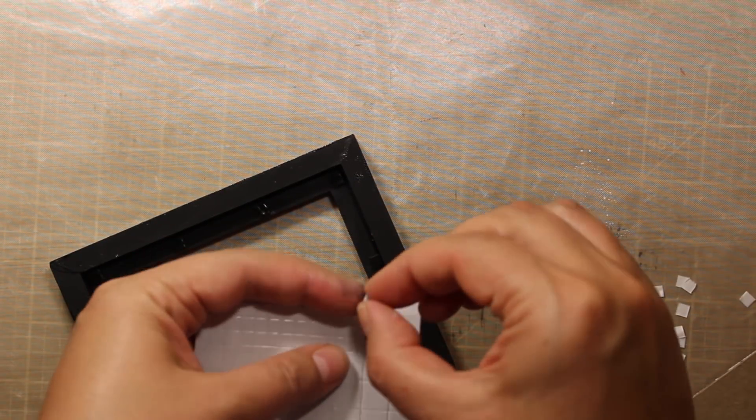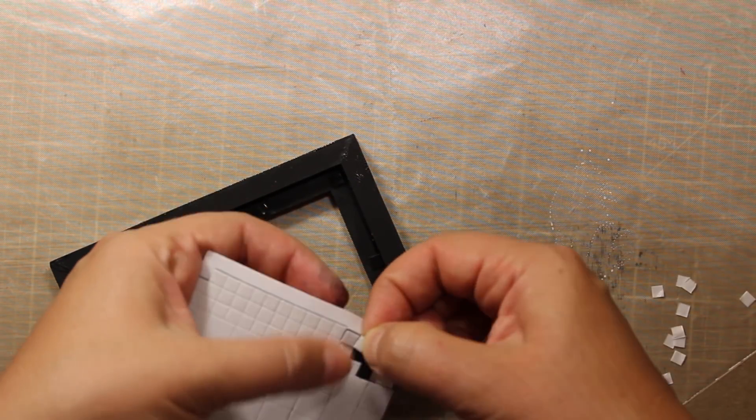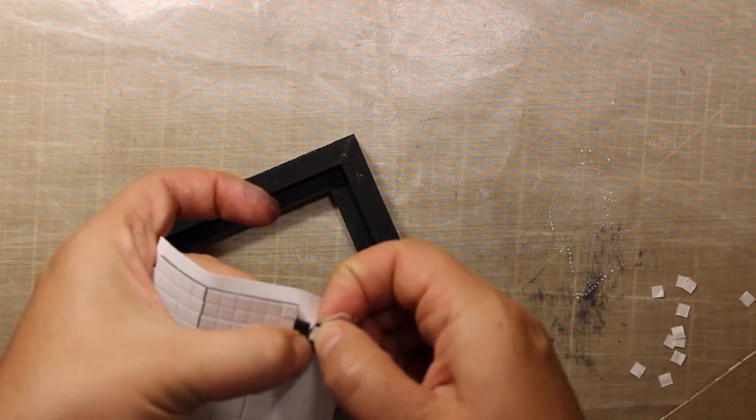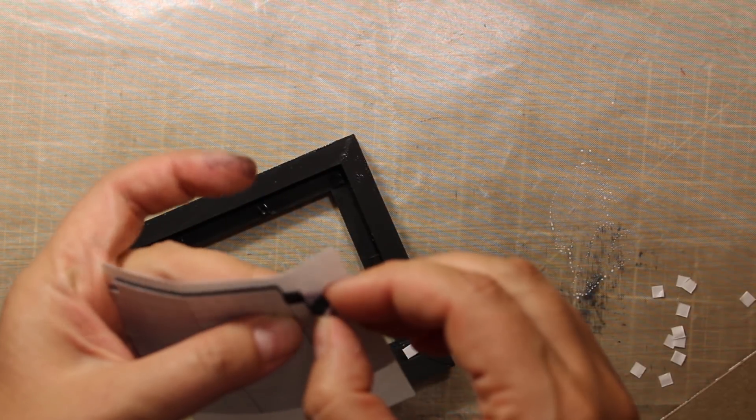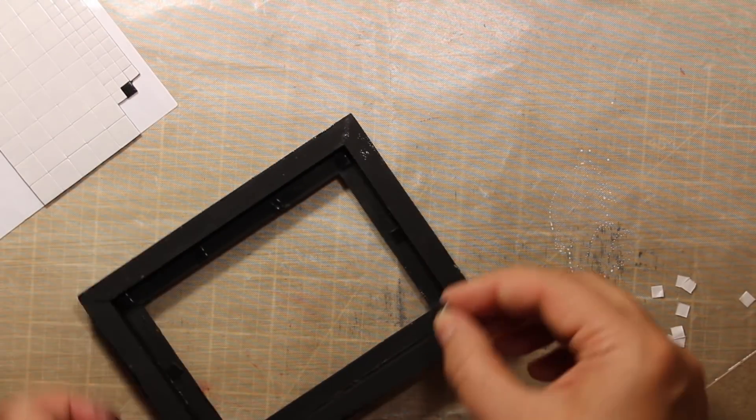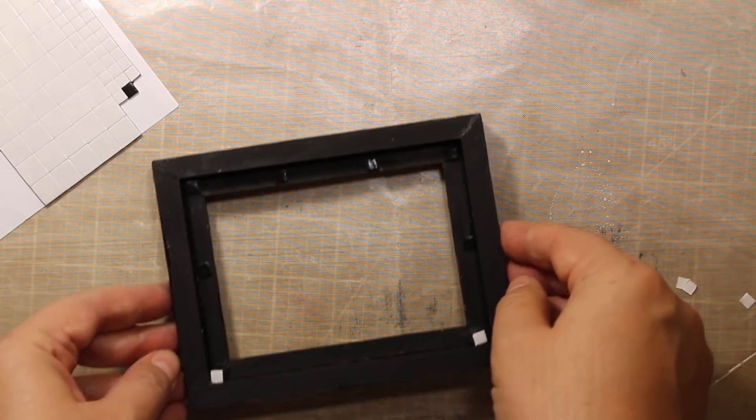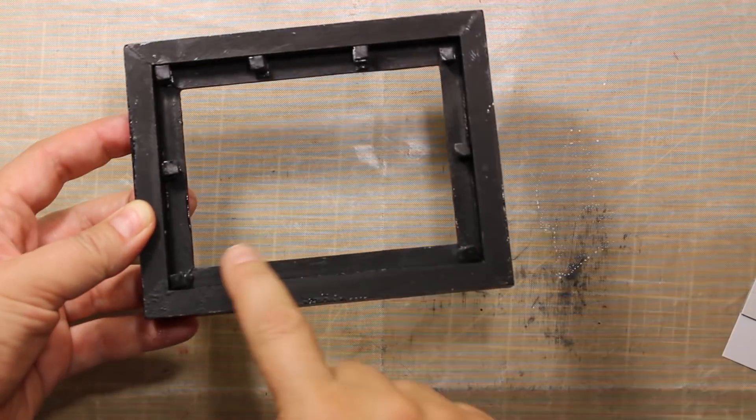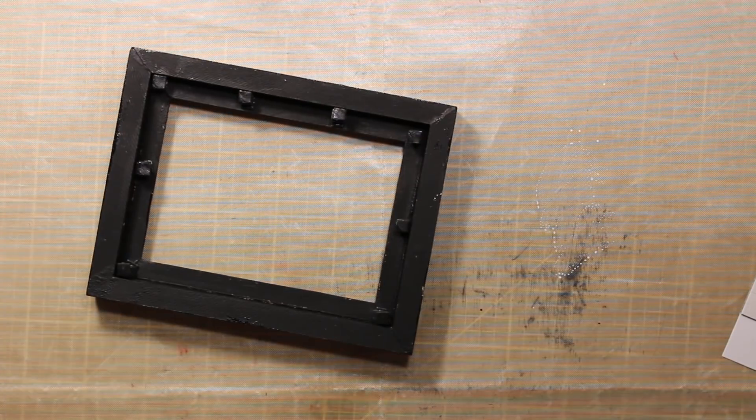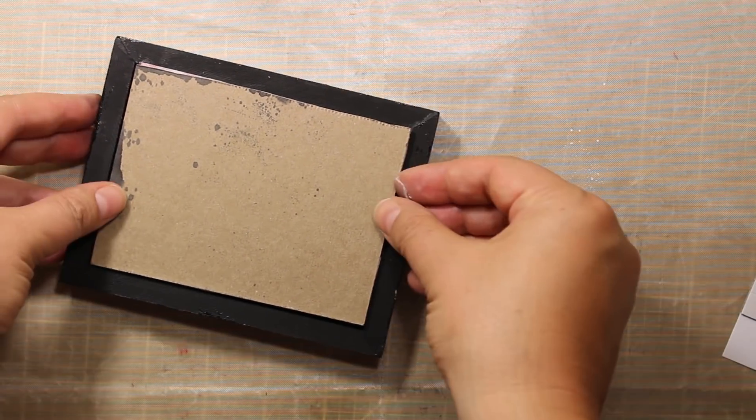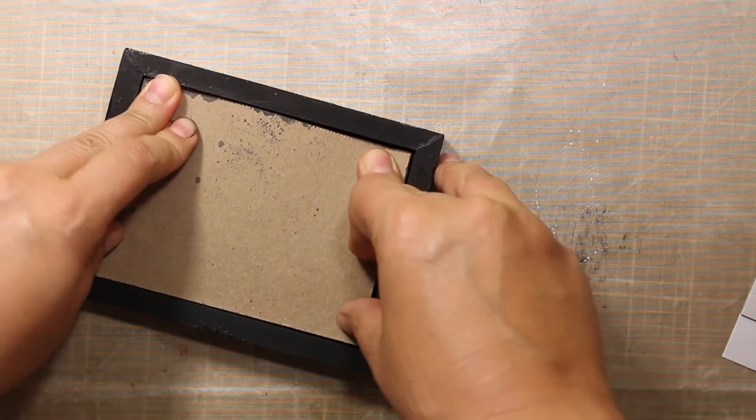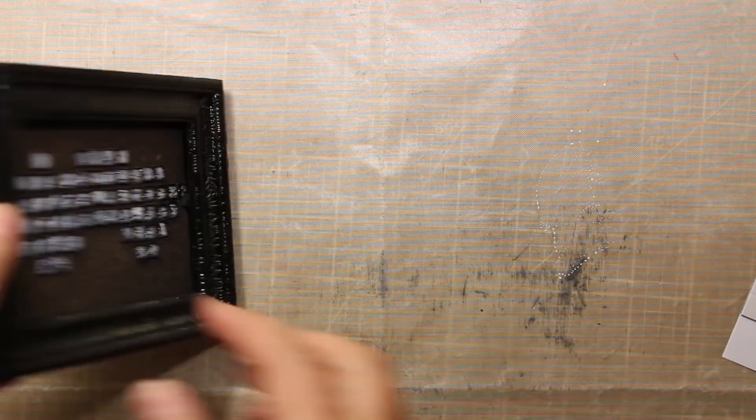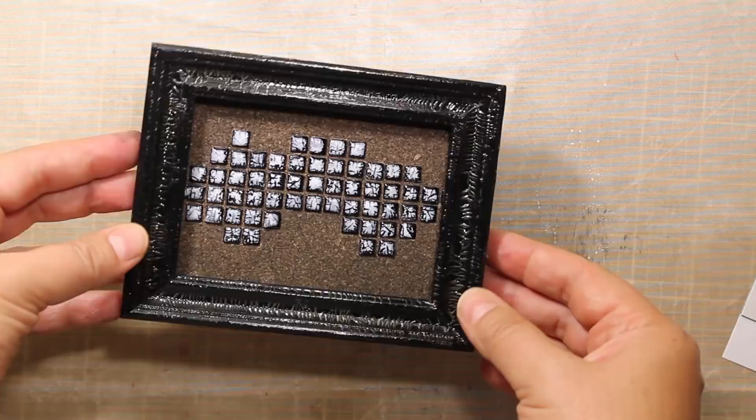To attach my background to the frame I'm going to use some black foam squares. I'm sticking four or five of them one onto the other and then I'm attaching them inside the frame and it creates something like feet there. This way the background will be placed at some distance behind the frame and that is going to create a lot of depth.